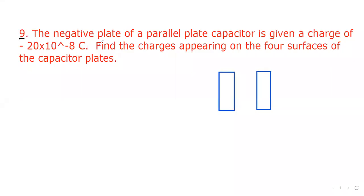Question number 9. The negative plate of a parallel plate capacitor is given a charge of minus 20 into 10 to the power minus 8 Coulomb. Find the charges appearing on the four surfaces of the capacitor plates. This is surface number one, surface number two, surface number three, surface number four.